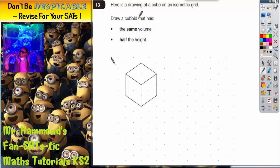Question 13. Here is a drawing of a cube on an isometric grid. Draw a cuboid that has the same volume but half the height.